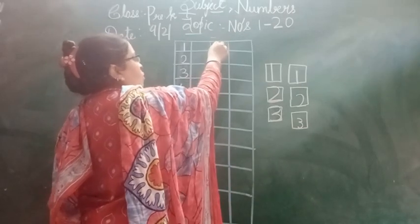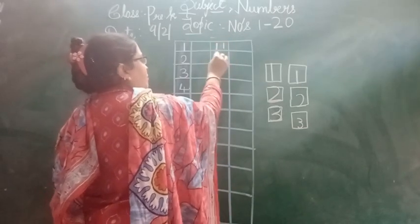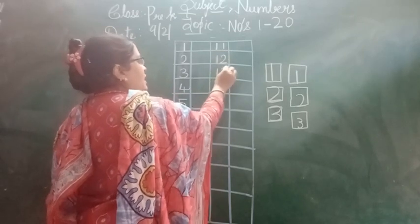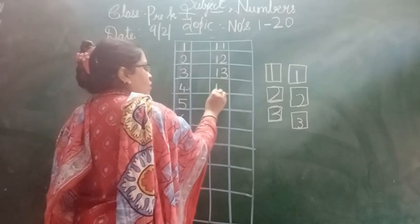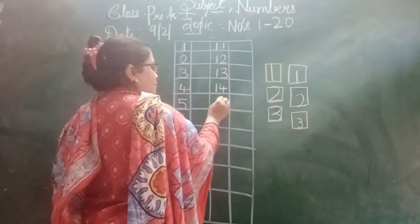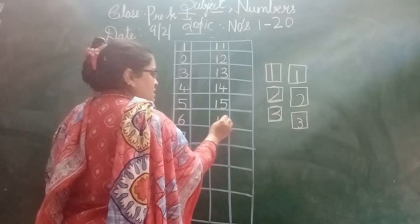From here 1, 1, 11. 1, 2, 12. 1, 3, 13. 1, 4, 14. 1, 5, 15. 1, 6, 16.